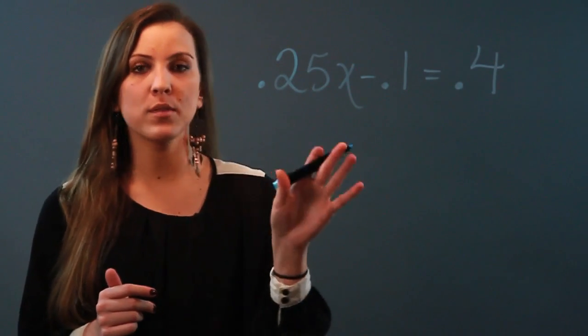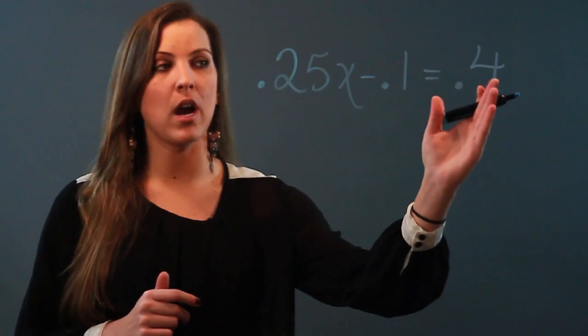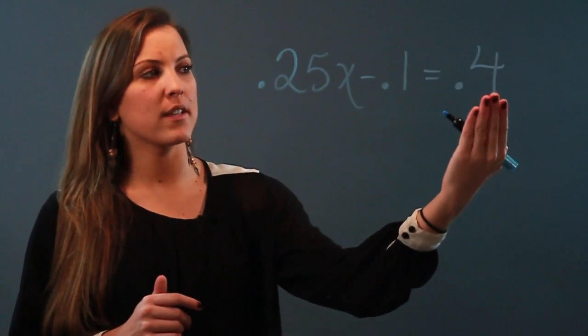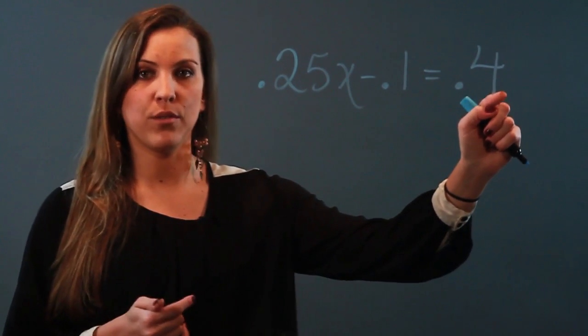You figure out the most amount of spaces that you need to move in order to get rid of every decimal in this problem. For example, if I wanted to get rid of the 0.4 and make this a whole number, I'd only have to move one decimal space over.